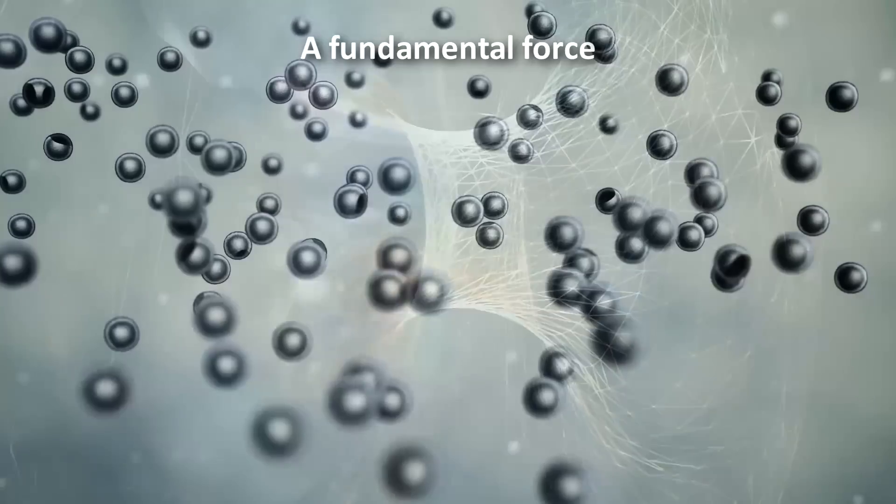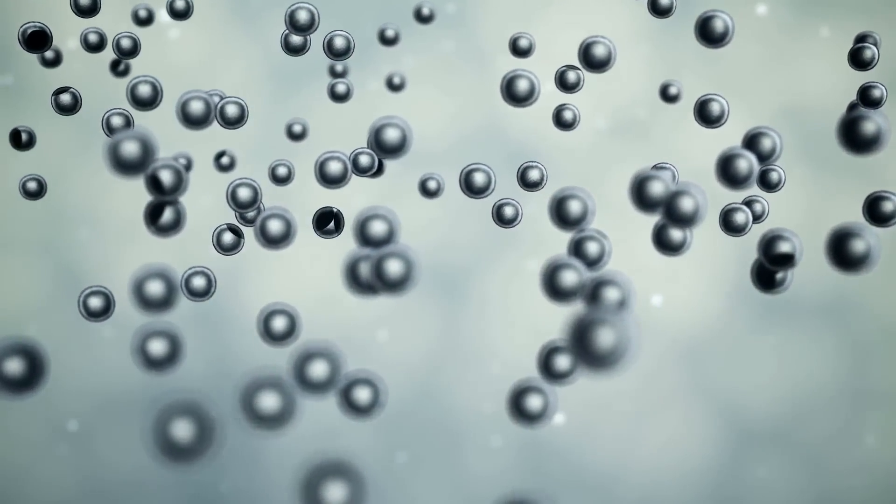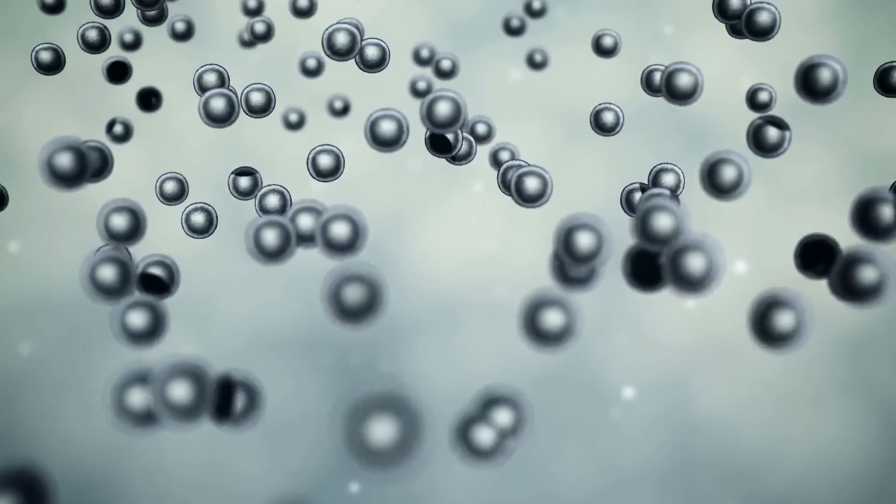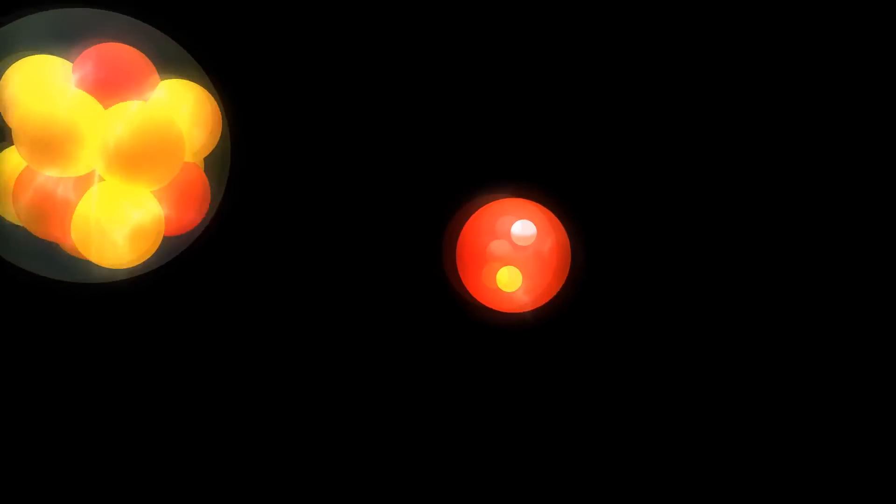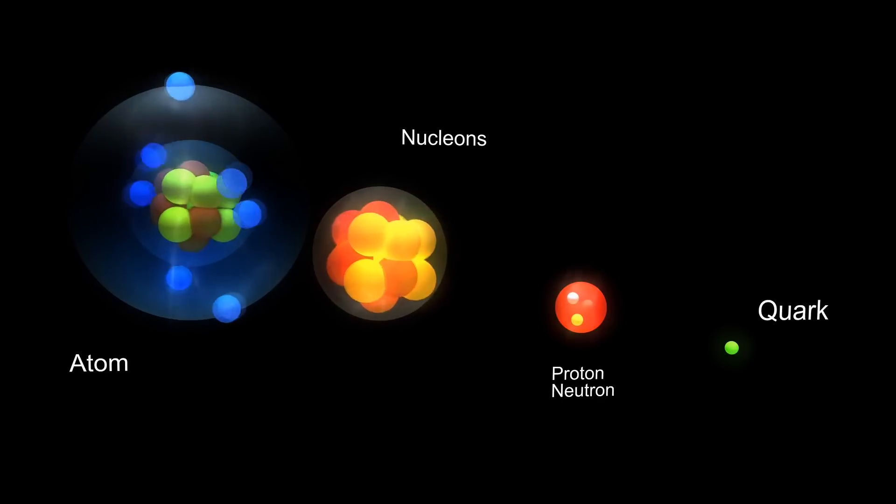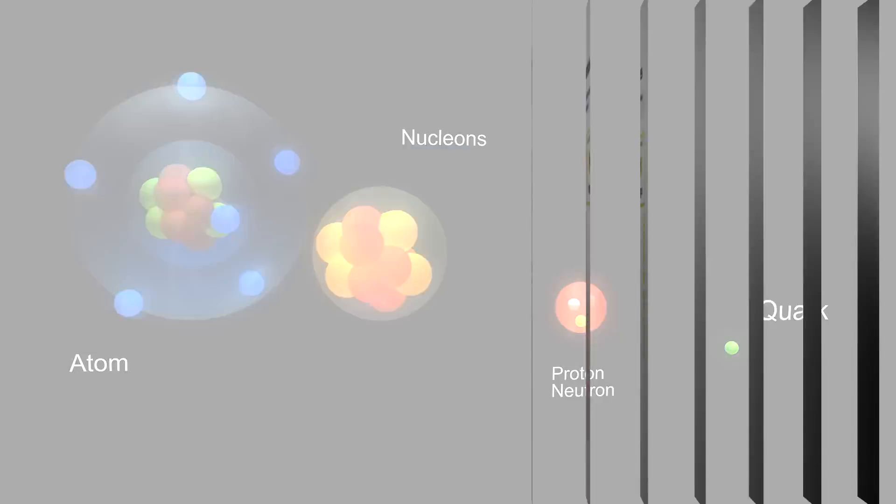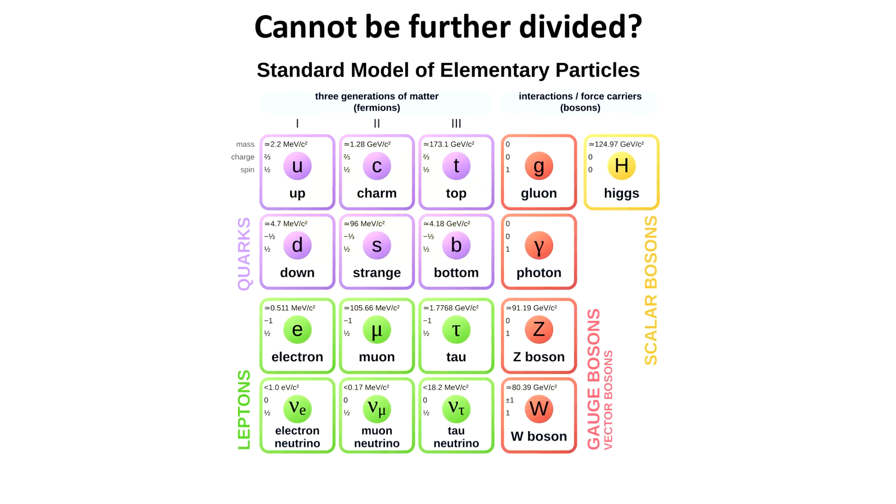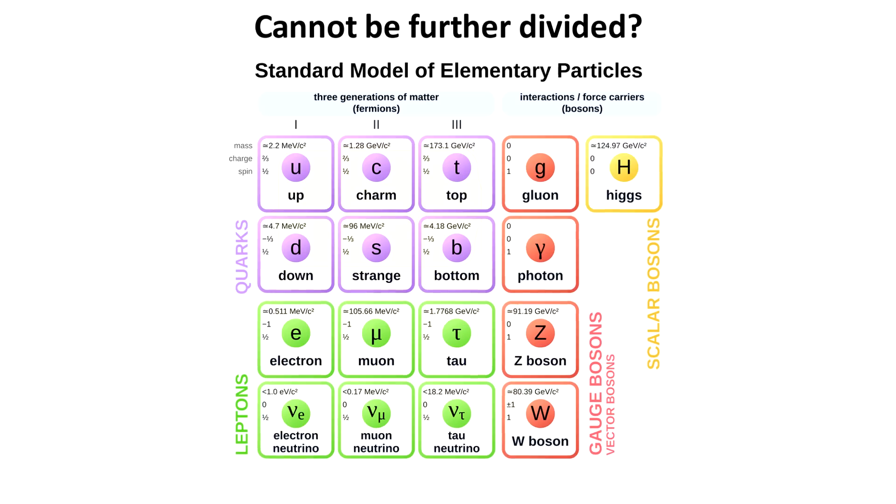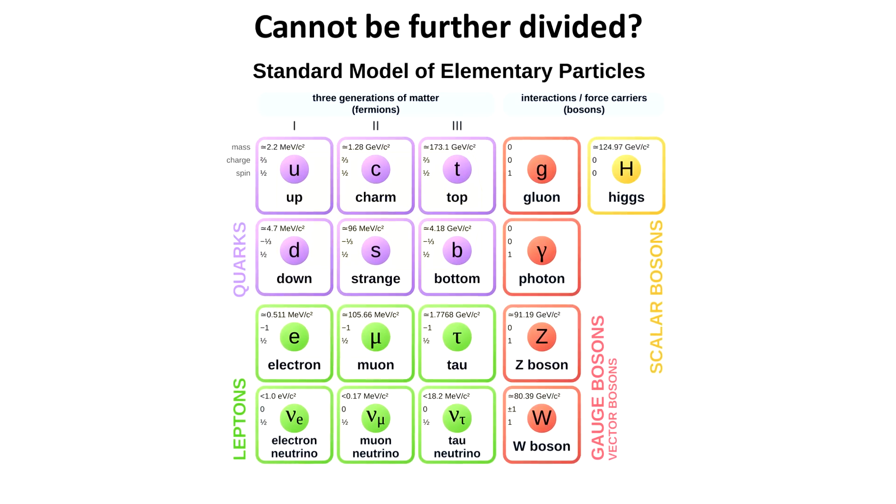At one time, atoms were thought to be the fundamental building block. Then in the 19th century, protons were discovered. Then in the 1960s, protons were found to be made of even more fundamental particles called quarks. These and all other particles of the standard model are currently thought to be fundamental and cannot be further divided. But we should probably expect that this is not the final answer.